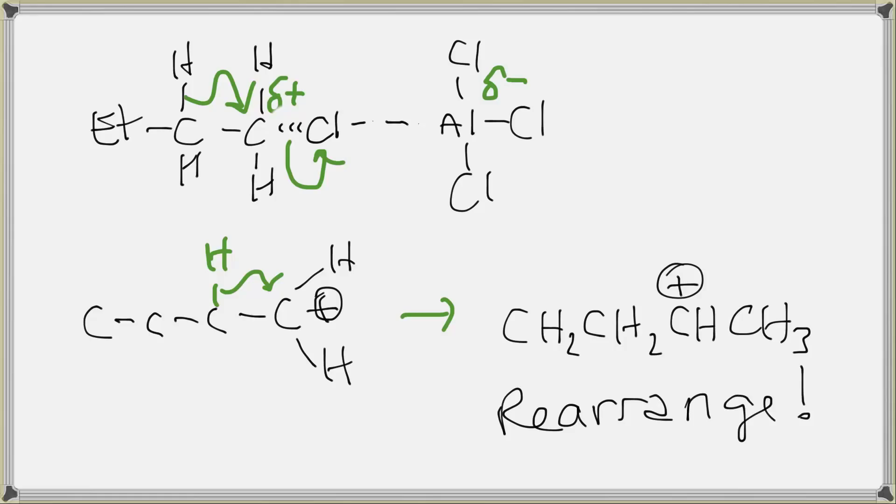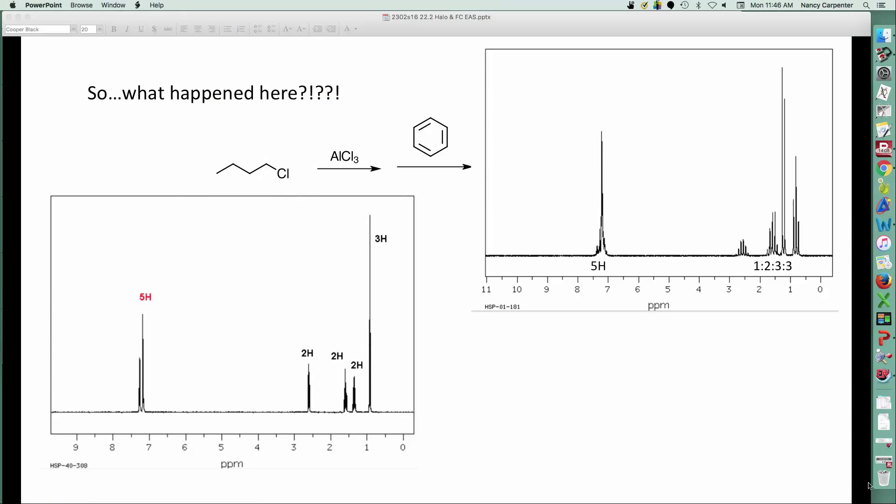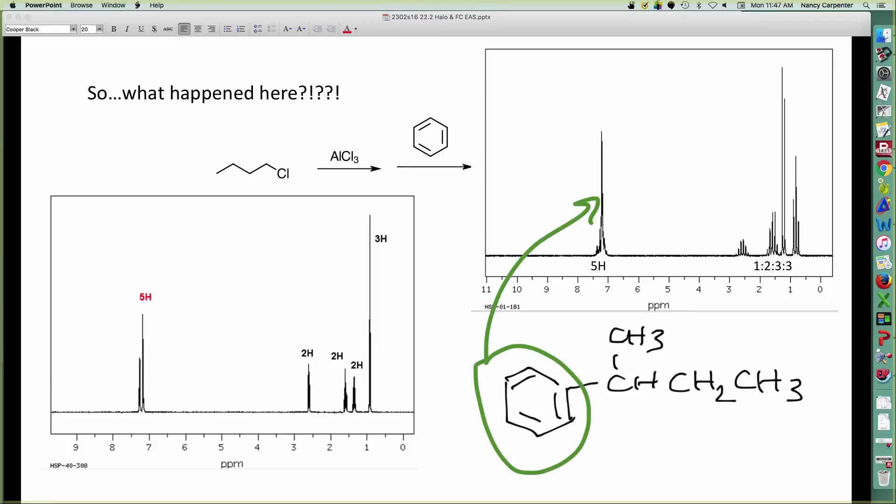Rearrangements happen. Remember, they're always going to be a danger if you're talking carbocations. So, that, in fact, is exactly what we have here. We have made not N-butylbenzene, but, in fact, we have made, or FRIDA, I should say, has made sec-butylbenzene, where we've got our five aromatic hydrogens. We've got a doublet right there. We've got a triplet right there. This little guy is a messy multiplet there. And the CH2 group is a messy multiplet there. So, beware, beware of rearrangements in electrophilic aromatic substitution.